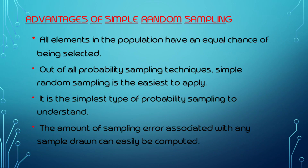The advantages of simple random sampling: all elements in the population have an equal chance of being selected. Out of all probability sampling techniques, simple random sampling is the easiest to apply and the simplest type of probability sampling to understand. The amount of sampling error associated with any sample drawn can easily be computed.